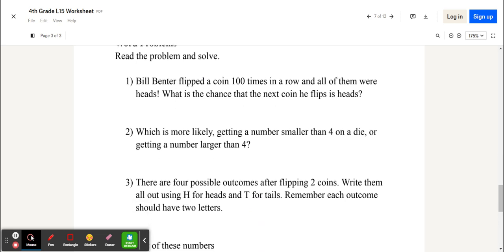And then Bill Benter flipped a coin 100 times in a row, and all of them were heads. That's really unlikely. But what is the chance that the next coin he flips is heads? The answer is actually very simple. It's 1 over 2, or 1 half, just like before. That's because the probability doesn't change when he flips the coin. The coin doesn't remember what happened in the past. So, its probability will always be the same. It's going to be 50%.